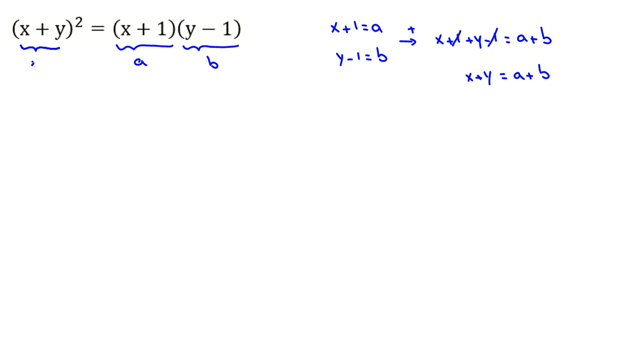So I can say x plus y is a plus b. Now if I rewrite this, a plus b squared equals ab. You should use this famous identity. We can say the left hand side equals a squared plus 2ab plus b squared equals ab.